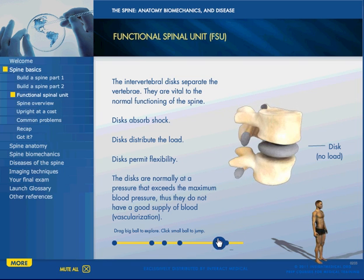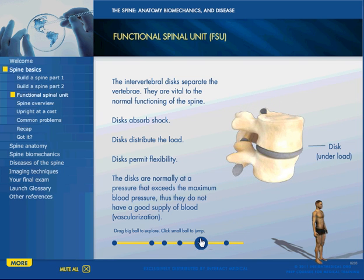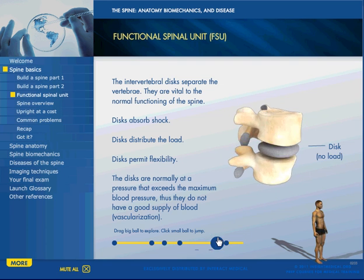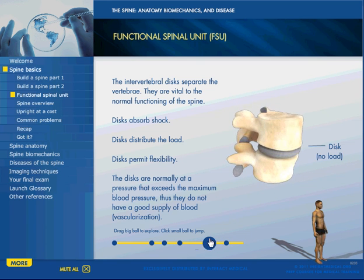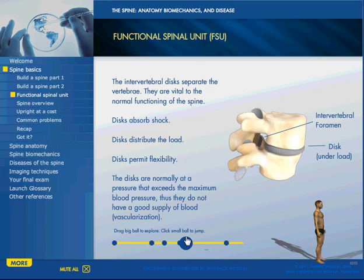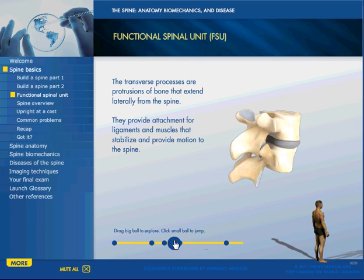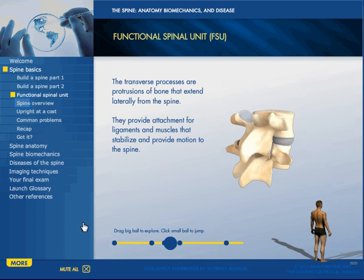So we can go back and forth — this is the disc under load, this is the disc with no load. The disc gets a little compressed between the vertebrae due to the load it undergoes.